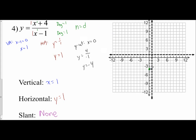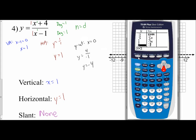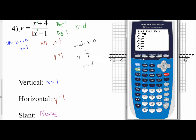Then I do reflection: I go 5 units up and 1 to the right to find another point on the graph. Then we go to our calculator. I'm going to show this both ways. For the old operating system, put the numerator x plus 4 in parentheses, divide by x minus 1 also in parentheses.